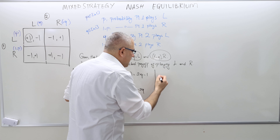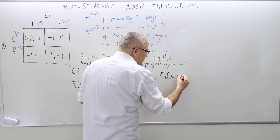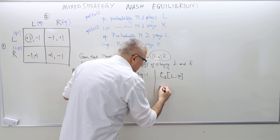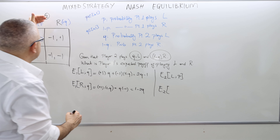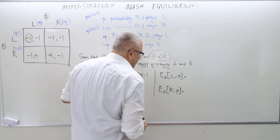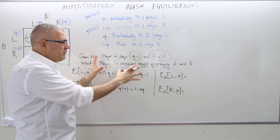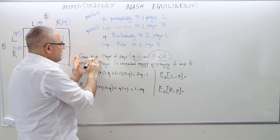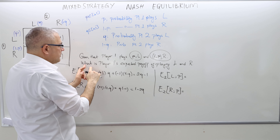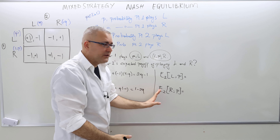Now, what about the expected payoff of player two, given that he plays left but his opponent chooses left with p probability and right with one minus p probability? And similarly, what is the expected payoff of player two by choosing right, given that his opponent is choosing left with p probability? That's the question I'm now answering.